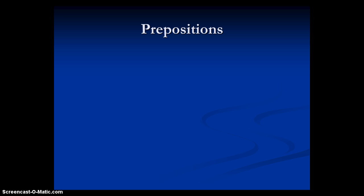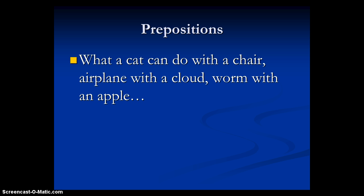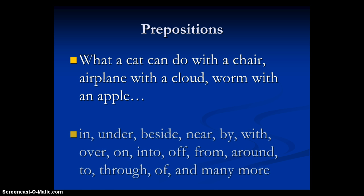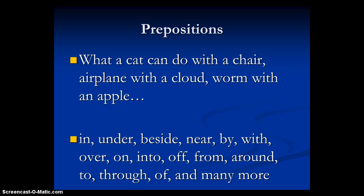Next, we have prepositions. This seems to be a sticking point for a lot of students. You may have heard tips like: prepositions are what a cat can do with a chair, what an airplane might do with a cloud, or what a worm can do with an apple. Words like in, under, beside, near, by, with, over, on, into, off, from, around, to, through, of, and many more. For example, a cat can be in, under, or beside the chair. Any word showing location would be a preposition — but don't be hung up on just location, because 'of' is also a preposition and doesn't really show location.